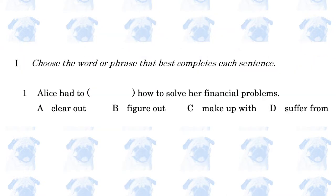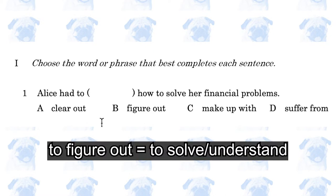Alice had to blank how to solve her financial problems. The answer is B, figure out. To figure out means to find the solution to, or to understand.